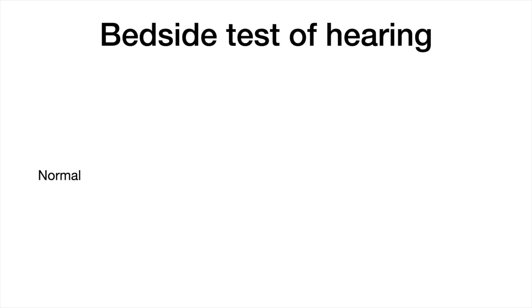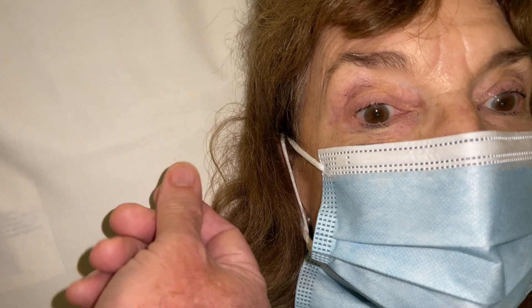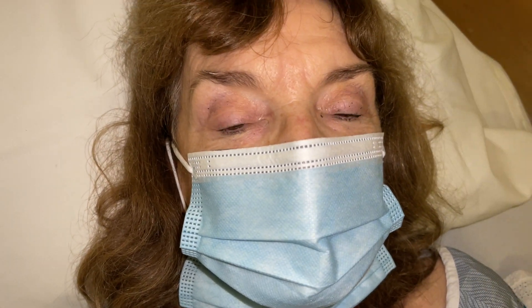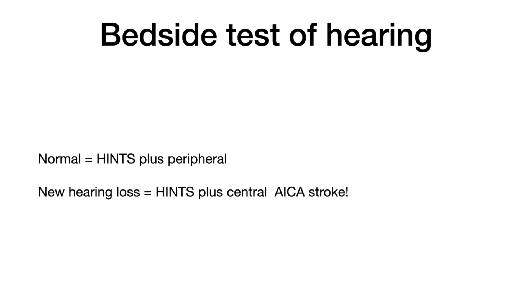Lastly, the plus part of the HINTS-Plus exam. Her bedside test of hearing with the finger rub test was normal on both sides — a HINTS-Plus peripheral result. A new loss of hearing in a patient with acute vestibular syndrome is a HINTS-Plus central result, as this is concerning for an anterior inferior cerebellar artery stroke, where the cerebellum and the end organs of balance and hearing are infarcted.